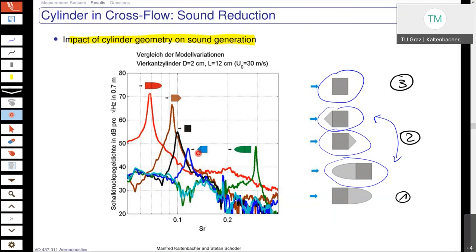So this is number four, and number five is when we put the ellipse in front. We have almost the same amplitude as we have with the triangular structure in front of the square cylinder — so upstream. However, we have a strong increase here in the frequency.